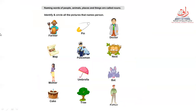Let's go to the next picture. Naming words of people, animals, places and things are called nouns. People, animals, places and things — all of that is nouns. Let's circle the noun.